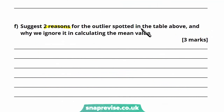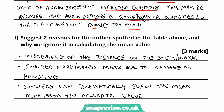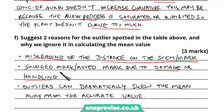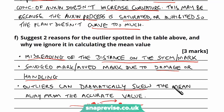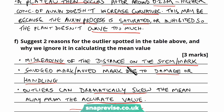Part F says suggest two reasons for the outlier spotted in the table and why we ignore it in calculating the mean. The outlier was a distance unusually large compared to the others — why might this have occurred? First, there could have been a misreading of the distances on the stem mark, for example measuring between two marks instead of one, which would make sense because 8 is about as large as two of the 4-mark distances. There could also be a smudged or moved mark because the stem may have been damaged or handled incorrectly. As for why we ignore it in calculating the mean: outliers can dramatically skew the mean away from the accurate value, so leaving it out gives a more accurate mean across all the data we want to consider.